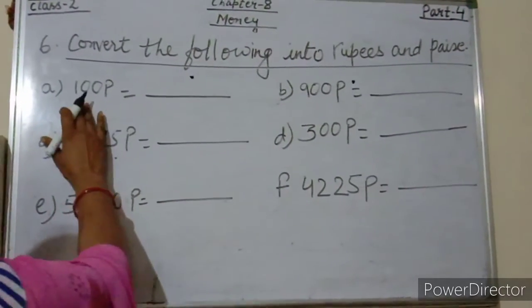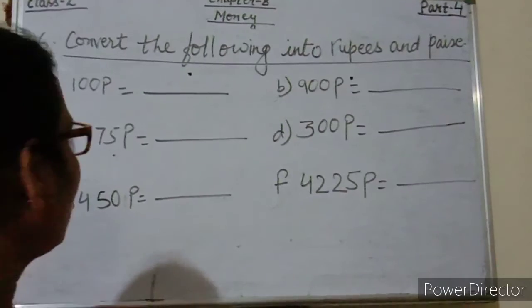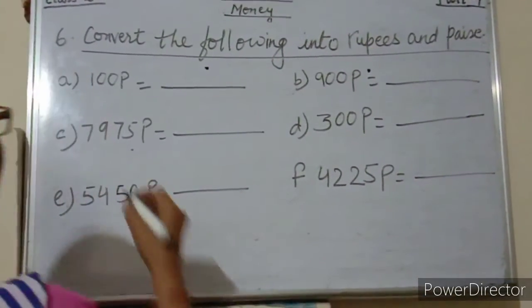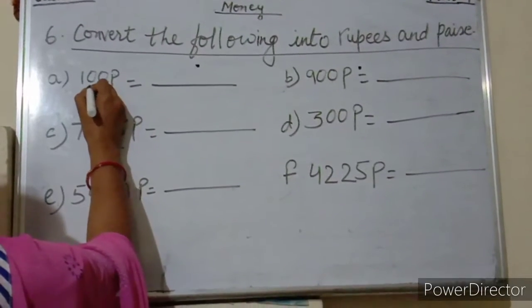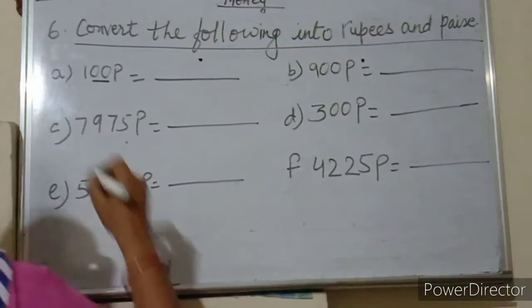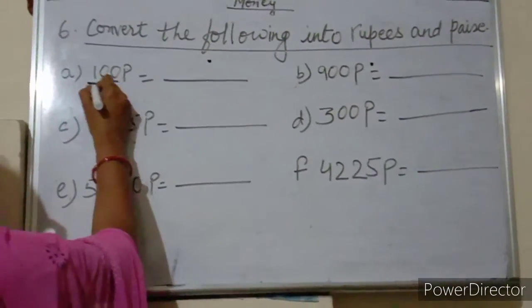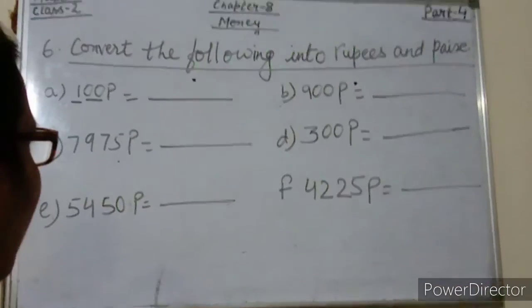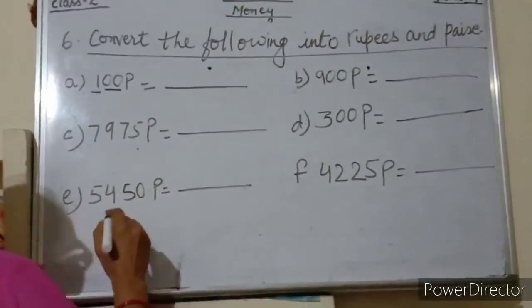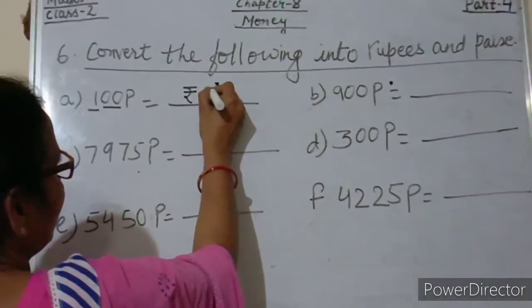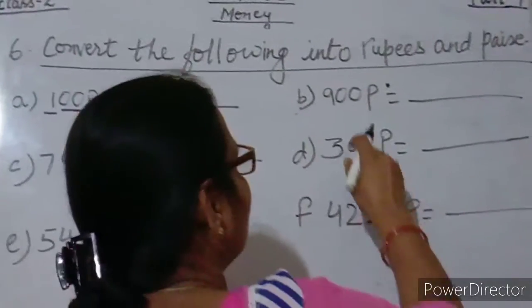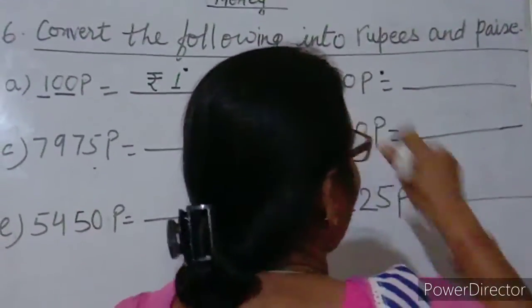The first value given is 100 paise. From the right, two digits are paise and the rest are rupees. So 100 paise is equal to 1 rupee. Next is 900 paise.